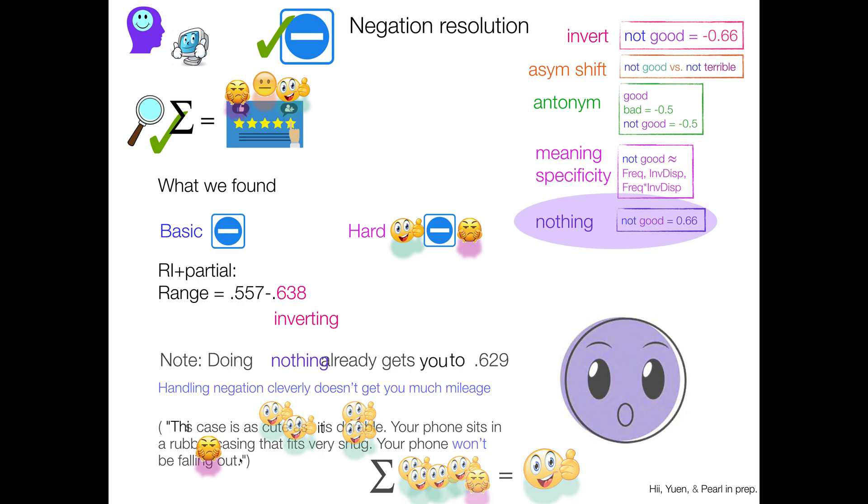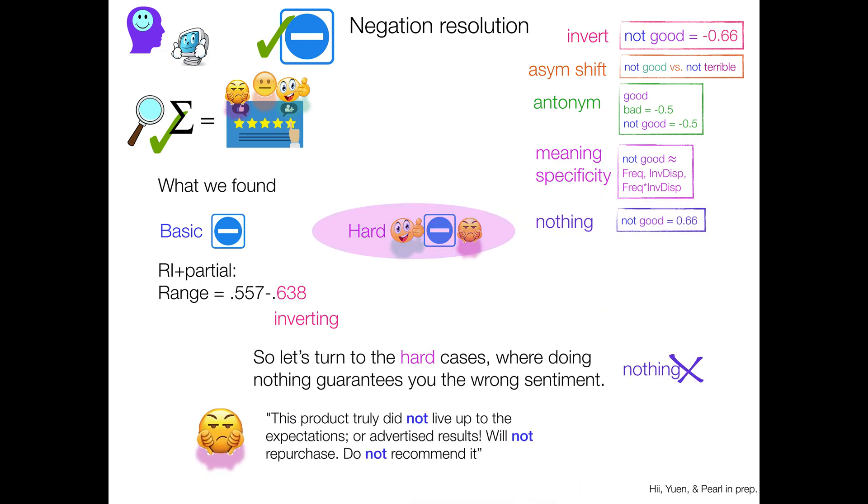So let's instead turn to the hard cases where doing nothing guarantees you the wrong sentiment. And in fact, the one that I showed you at the very beginning is one of these hard cases. You have negation and it really impacts what happens. So if you like ignore negation, you have a lot of very positive sentiment words. And in fact, you think, oh, hey, this is a positive review, when in fact, it's actually quite a negative review. So these are our hard cases.